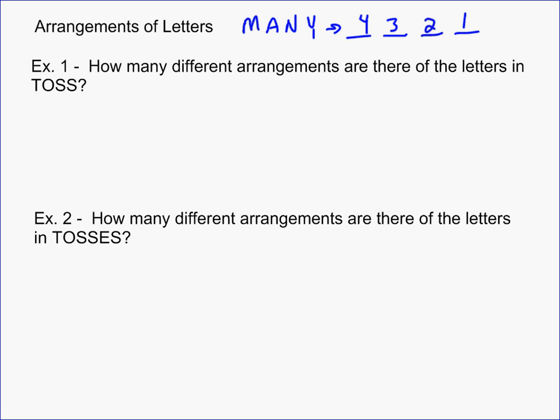If you're talking about a word like example one that uses the word TOSS, things get a little bit different. And the reason why is you can't just do 4 permute 4, you can't just do 4 times 3 times 2 times 1. The reason why is this counts all the different arrangements of these letters as if these two S's were separate. So for instance maybe we'd call them S1 and S2. And so that would say that this is different than this.